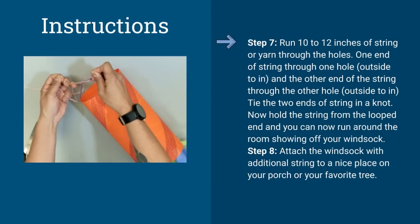Step seven. Run 10 to 12 inches of string or yarn through the holes. One end of string through one hole, outside to in, and the other end of string through the other hole, outside to in. Tie the two ends of string in a knot. Now hold the string from the looped end and you can now run around the room showing off your windsock.